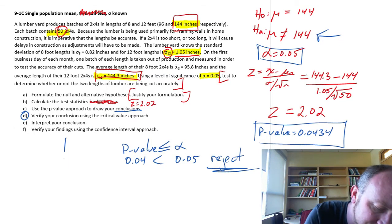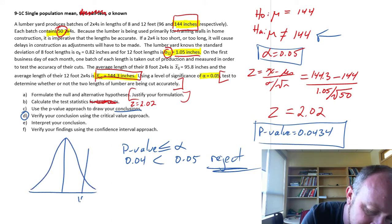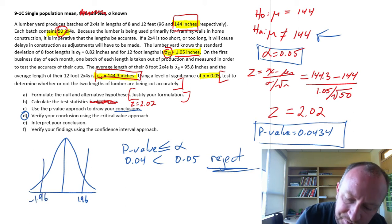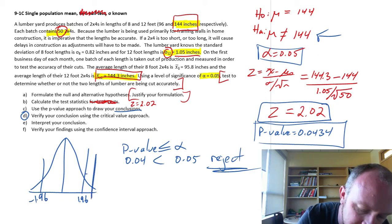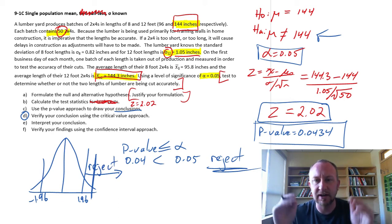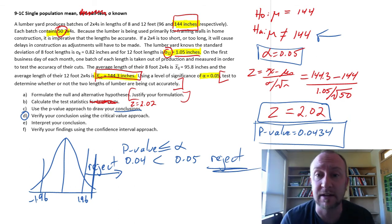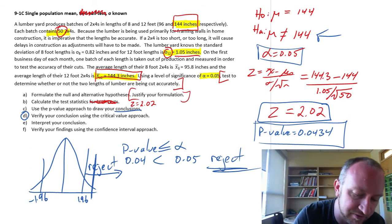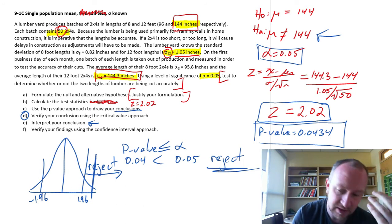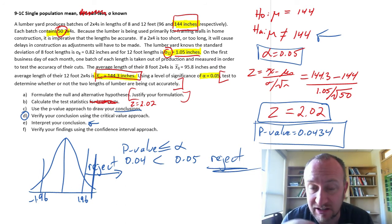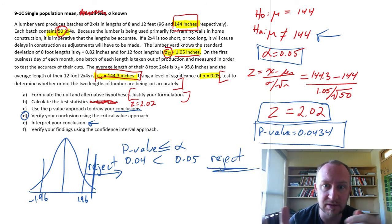I'm going to reject if it's greater than positive 1.96 or smaller than negative 1.96. Redraw this distribution. Here's 1.96, here's negative 1.96. Our test statistic is 2.02. So it's out here somewhere. And that is in that rejection space. So we find the same conclusion as we should expect. Everything's fine. We've got the right conclusion. I've already interpreted our conclusion. We have evidence to support the alternative. So we have a problem that we should probably fix.